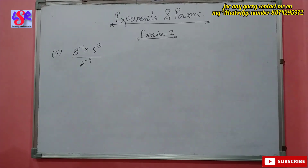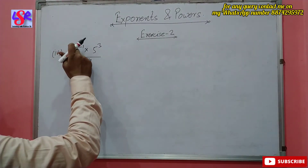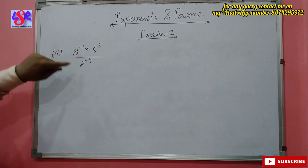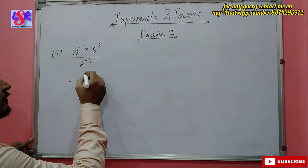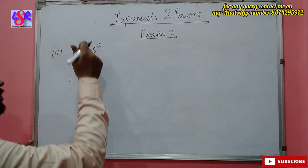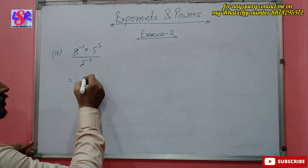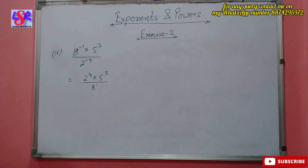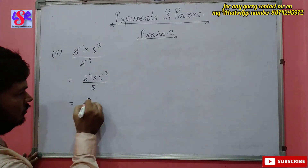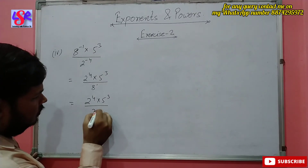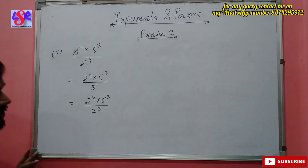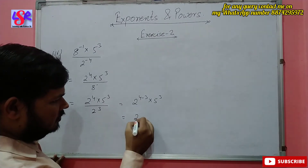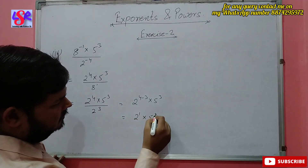The fourth part is 8 to the power minus 1 into 5 to the power 3, upon 2 to the power minus 4. We first convert the negative exponents to positive by taking reciprocals: 8 to the power minus 1 moves to the denominator and 2 to the power minus 4 moves to the numerator, giving 2 to the power 4 into 5 to the power 3, upon 8 to the power 1. Now 8 is 2 to the power 3, so this is 2 to the power 4 into 5 to the power 3, upon 2 to the power 3. Same base means powers subtract: 2 to the power 4 minus 3 into 5 to the power 3, giving 2 to the power 1 into 5 to the power 3 as the answer.